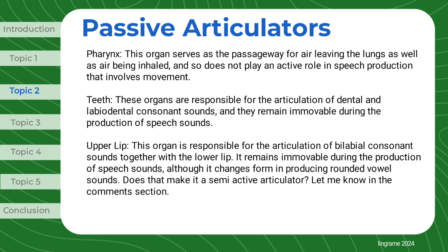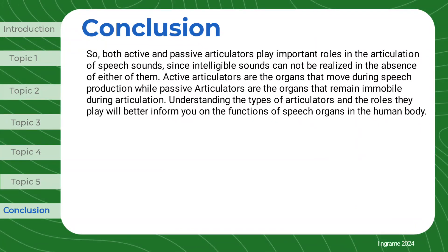Does that make it a semi-active articulator? Let me know in the comments section. Both active and passive articulators play important roles in the articulation of speech sounds, since intelligible sounds cannot be realized in the absence of either of them. Active articulators are the organs that move during speech production, while passive articulators are the organs that remain immobile during articulation. Understanding the types of articulators and the roles they play will better inform you on the functions of speech organs in the human body. See you soon.